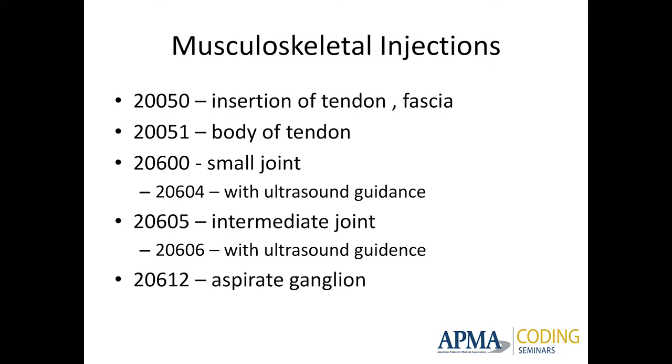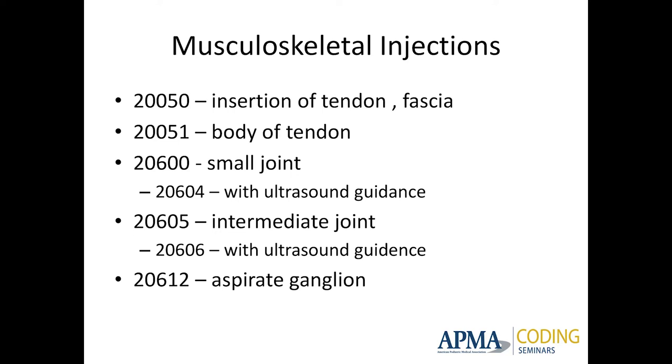20605 is for intermediate joints including the ankle. There is a code for ultrasound-guided injection — 20604 and 20606 — and those are based on small, intermediate, and large joint as well. You don't bill those two codes together; that code includes the injection and the ultrasound visualization. Previously you would bill the ultrasound visualization and the separate joint injection, but now there's a combined code. That includes the injection and the visualization, so one report and one code.